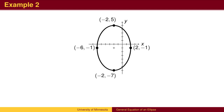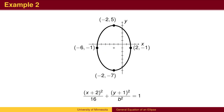Let's find the equation for this ellipse. The center is at (-2, -1), so the numerators will be (x plus 2)-squared and (y plus 1)-squared, respectively. From the center, we move left and right 4, so a-squared equals 4-squared, which is 16. From the center, we move up and down 6, so b-squared is 6-squared, which is 36. This is the standard equation of the ellipse.